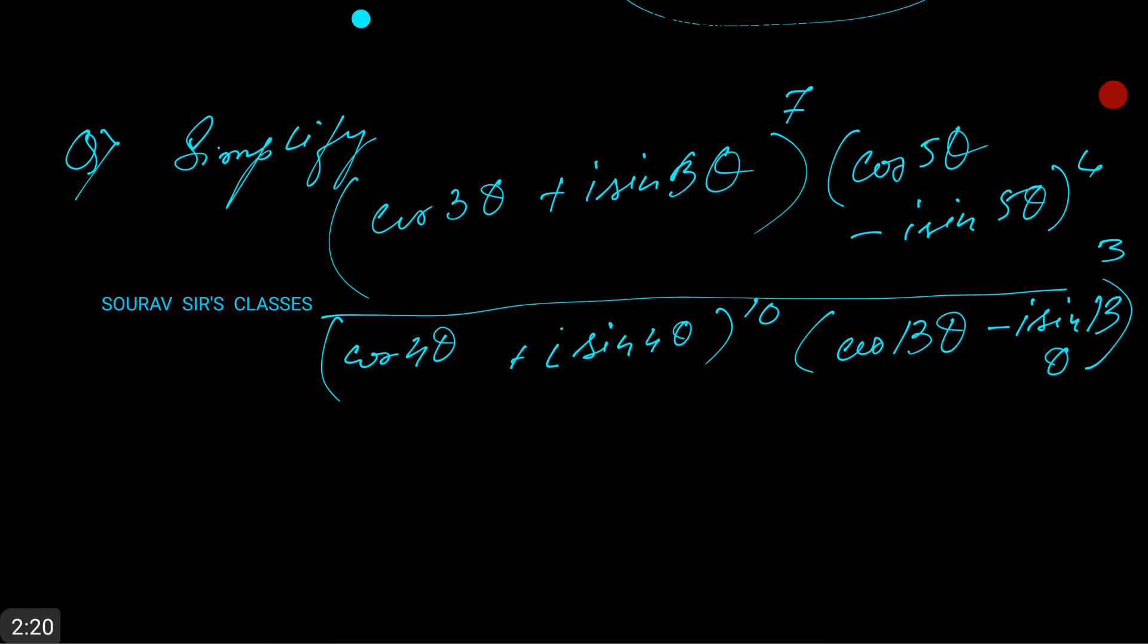How do we solve this? The solution: the given expression becomes (cos θ + i sin θ) to the power of 3×7, which gives us 21. We take the 5 outside and